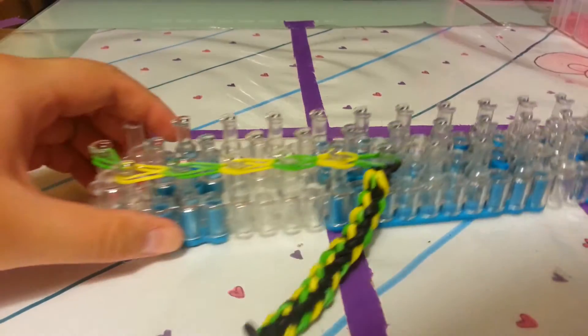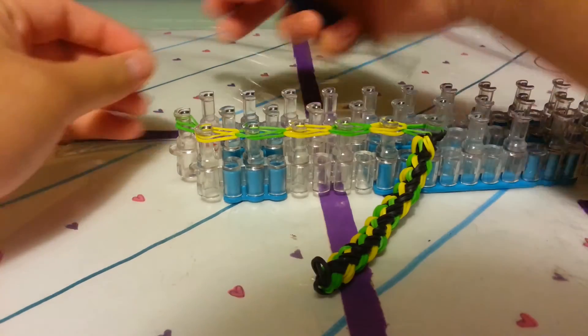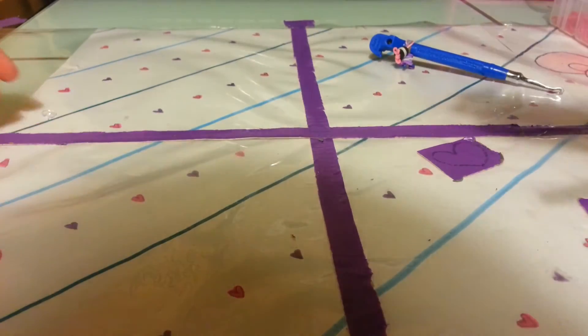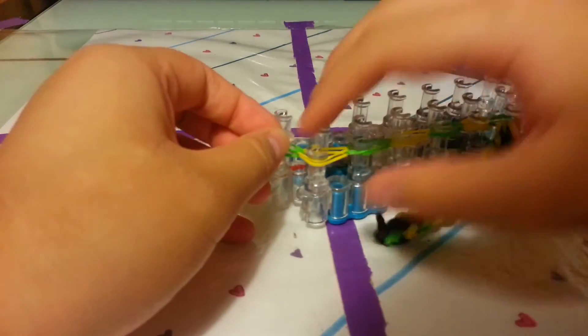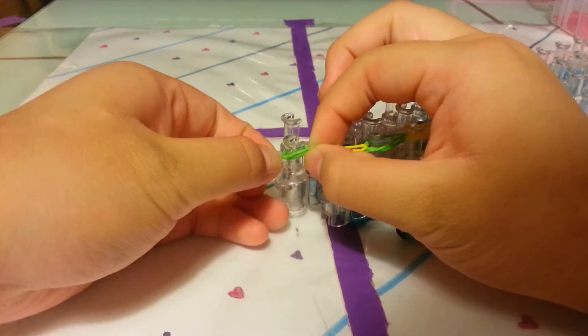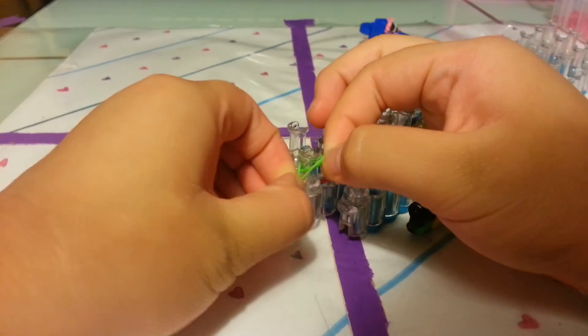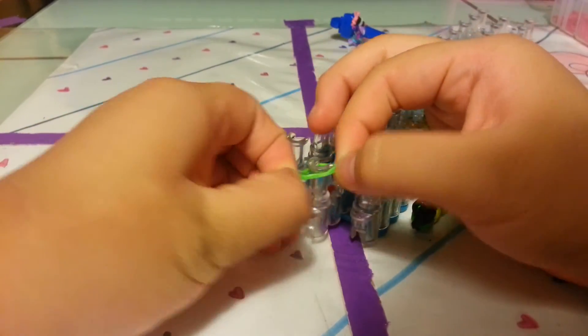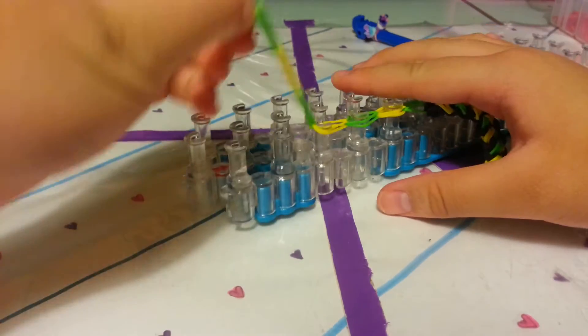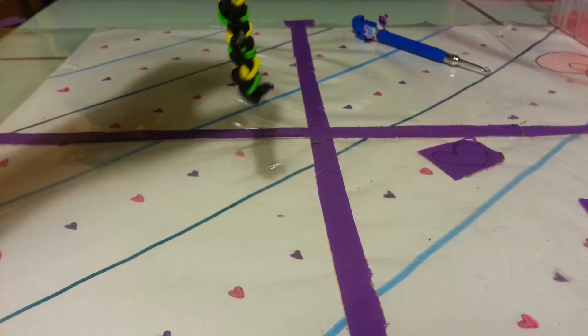Now I'm just going to take my clip and place it on these two pegs right here - I mean bands. Pull it off the loom and you can put your loom aside now.